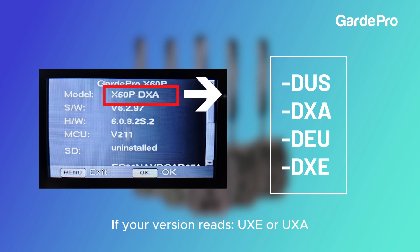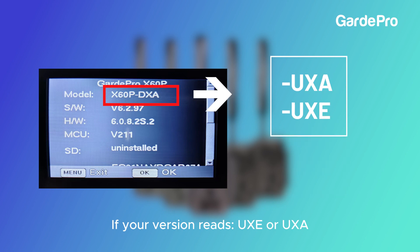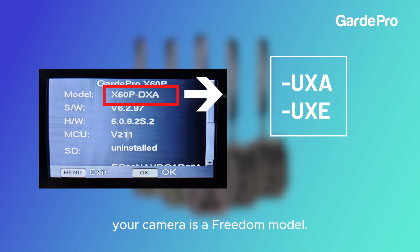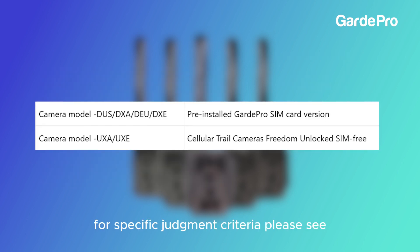If your version reads UXE or UXA, your camera is a freedom model. For specific judgment criteria, please see the description.